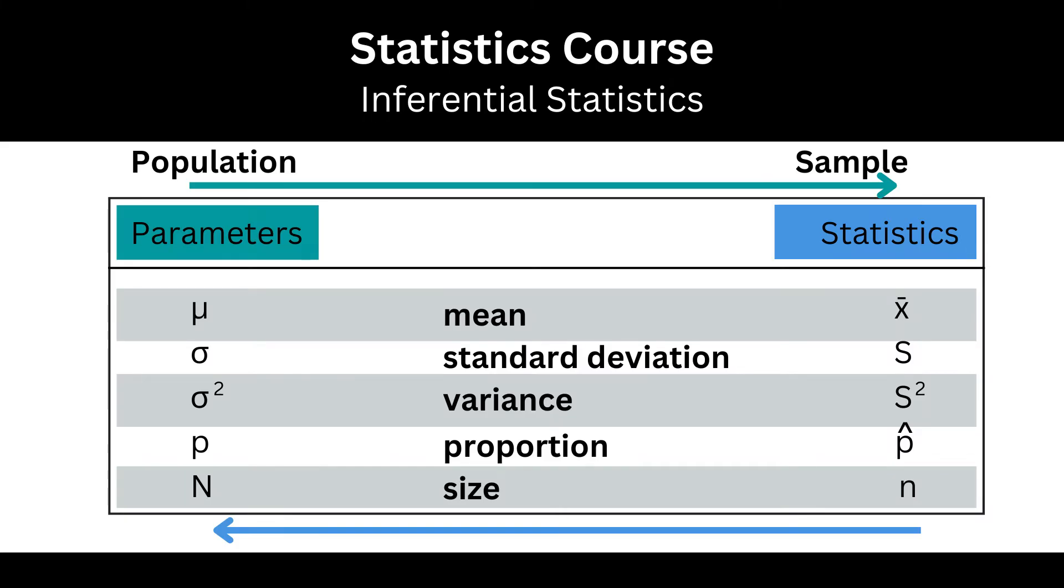Big N is the number of data points in the population. The whole population consists of 20,000 people, so N, population size, equals 20,000 people. Small n, sample size, is 50. Both are constants.